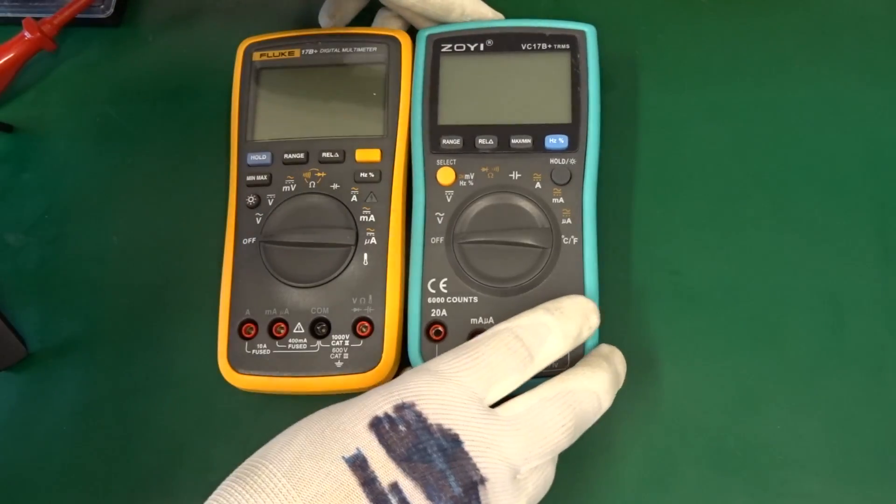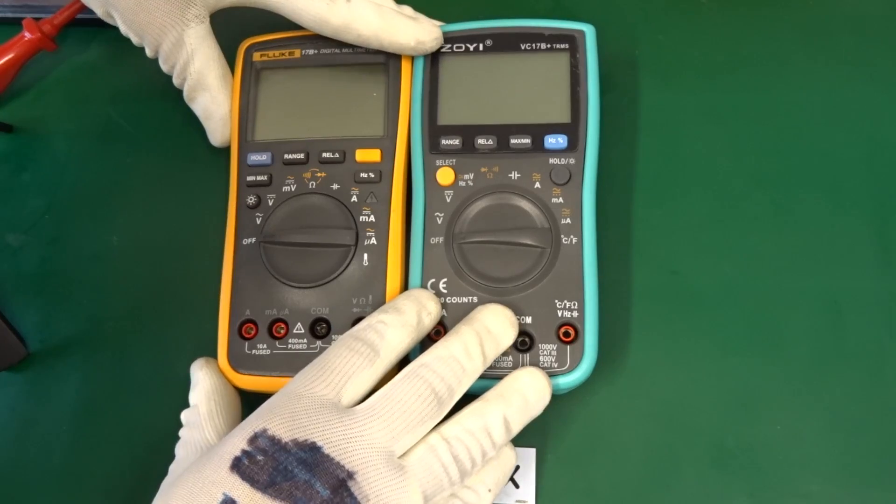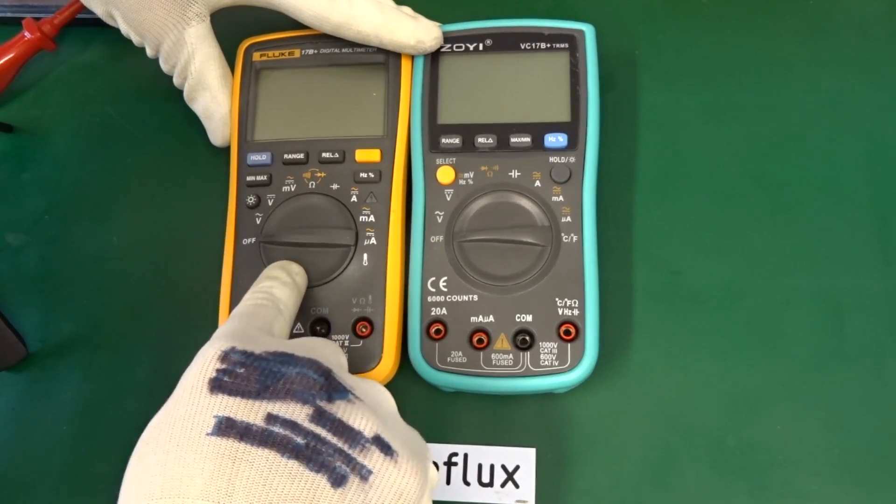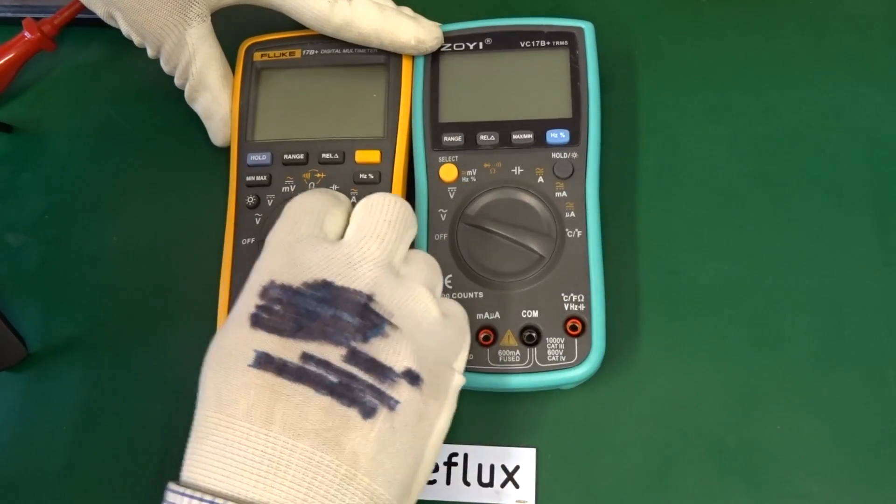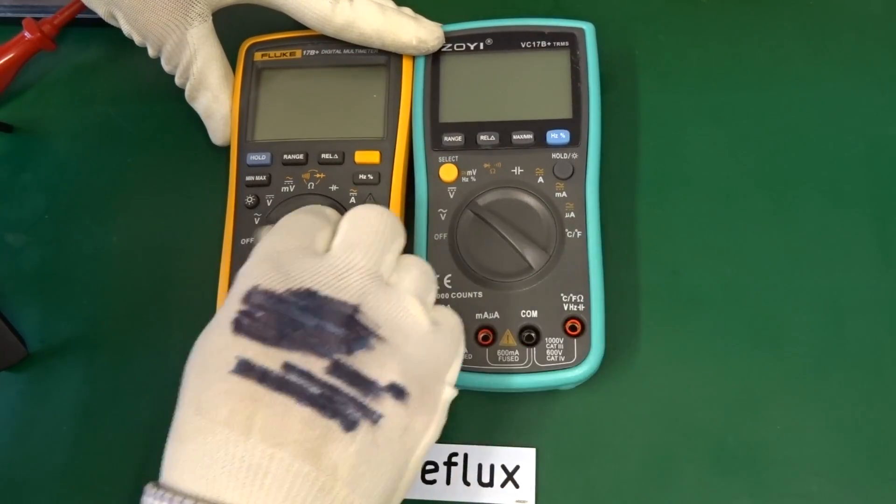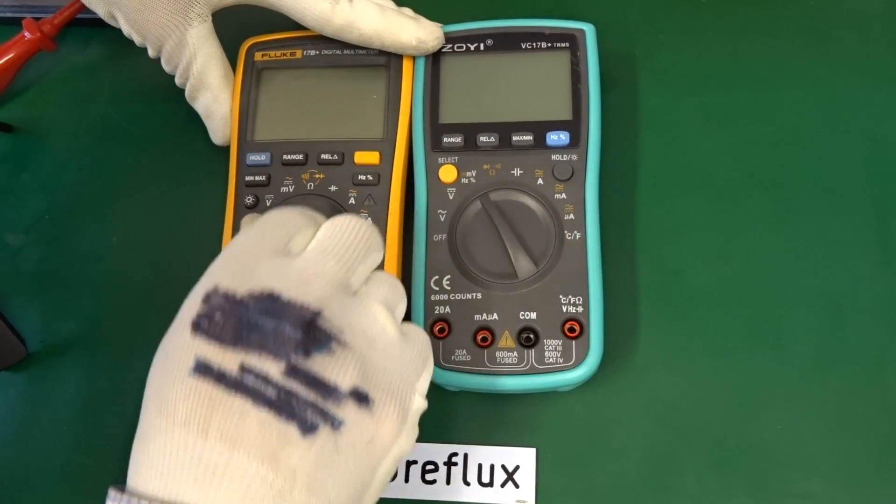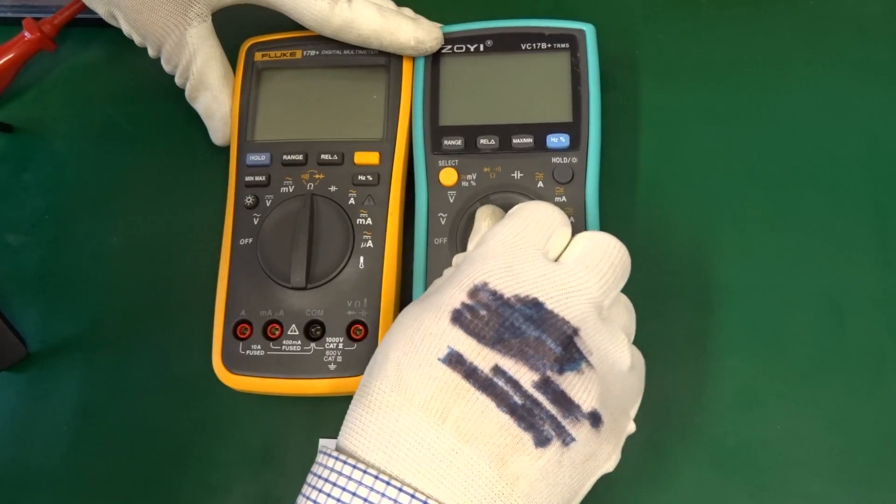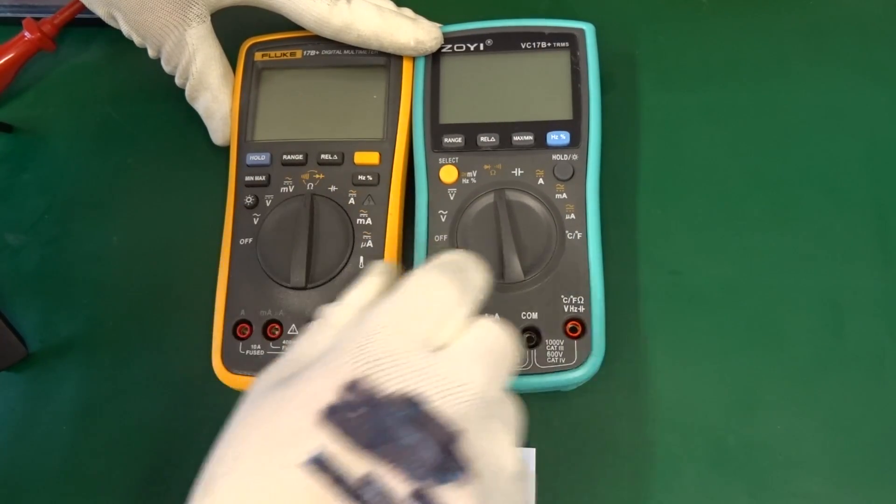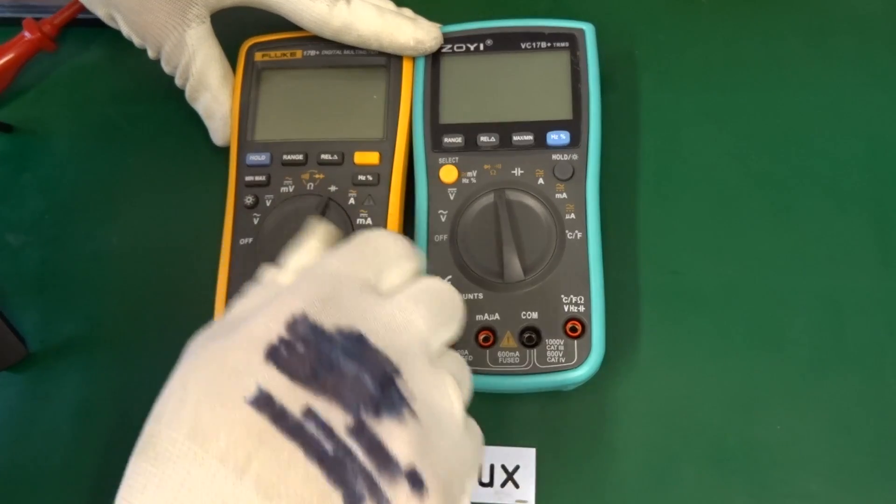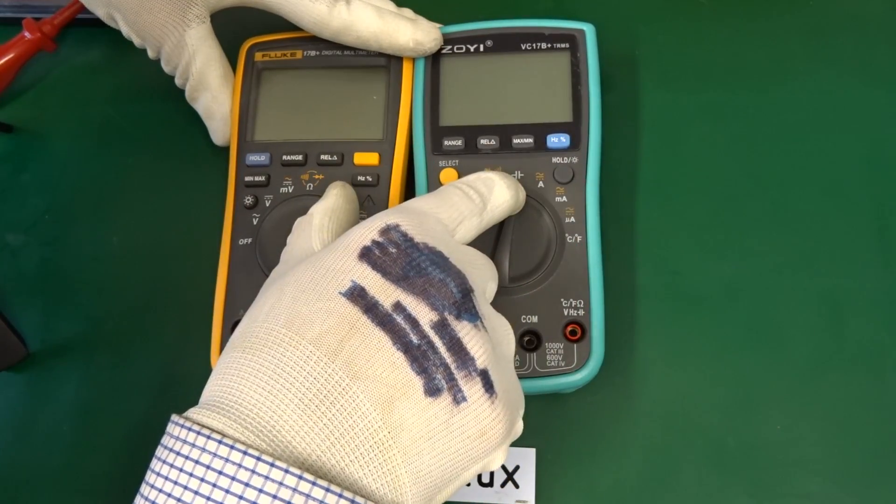So first see the obvious difference. The range switch are very similar. We have the AC range. Then we have the DC range. We have millivolts. We have ohms and also diode checking and some beeper.